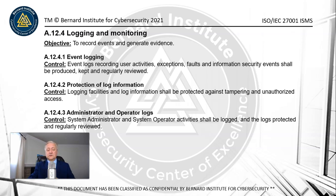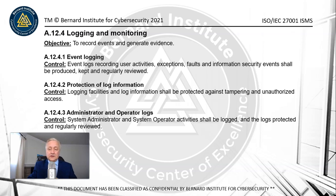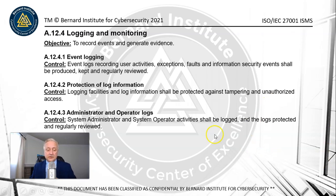Control A.12.43 covers administrator and operator logs — what we call privileged authorities. Anybody who has a privileged authority can bypass application security, going into the operating systems of different appliances, servers, and devices. That's a lot of power, so it needs to be managed and monitored. This also protects those employees, because hackers go after privileged accounts, and we need to prove it wasn't the employee acting — it was someone who hacked the system.